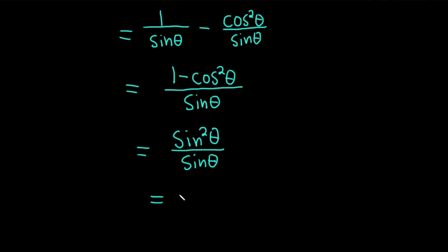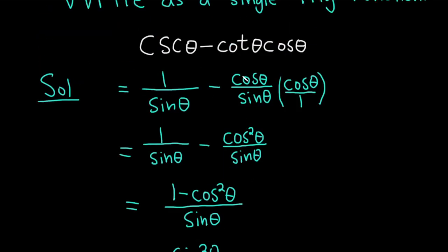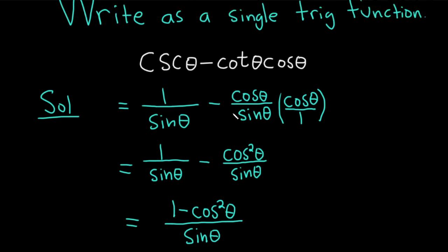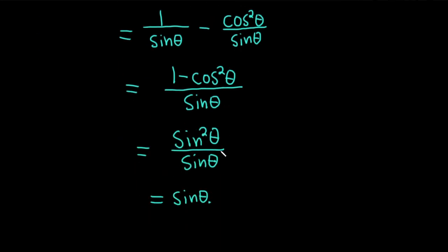So one of the sines cancels and we're just left with the sine of theta. So that would be the final answer. We were able to take our original expression, cosecant theta minus cotangent theta cosine theta, and rewrite it as a single trig function, sine theta.